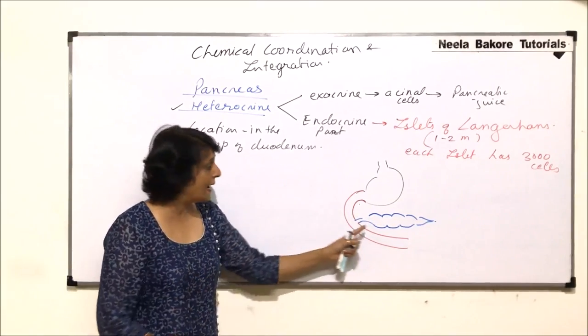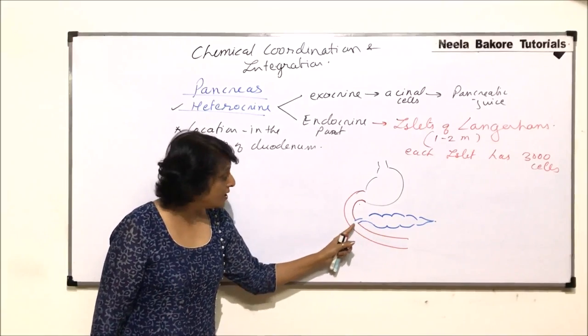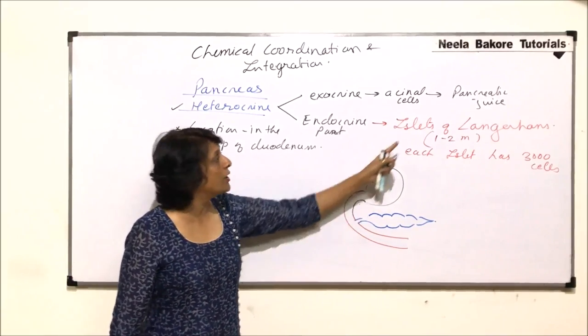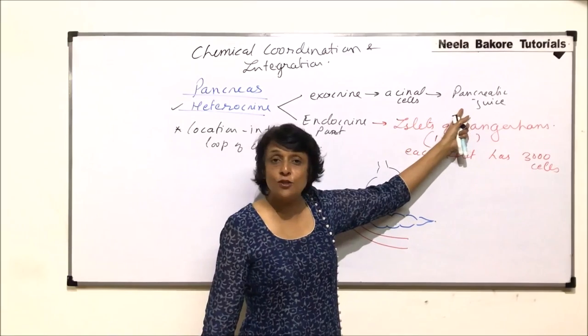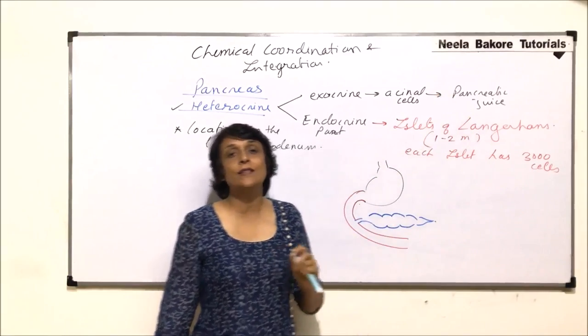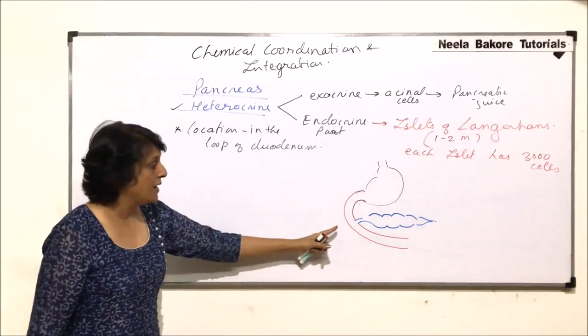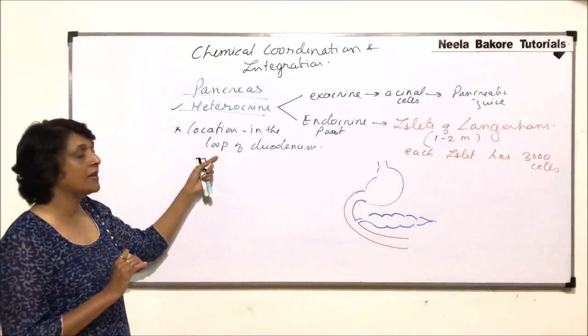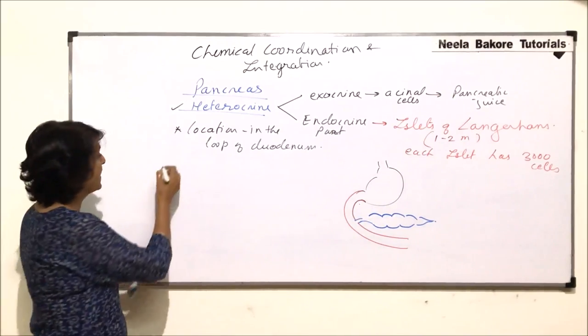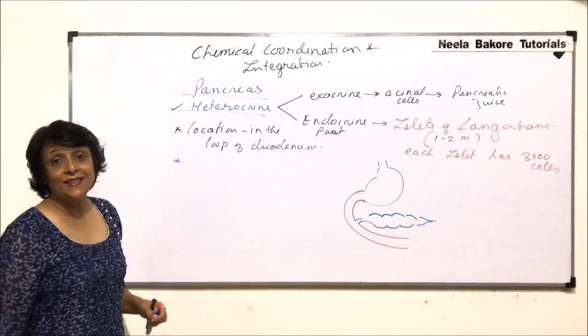The secretions are put together from liver as well as from pancreas. We are not getting into details of that, but the secretion coming into duodenum is the pancreatic juice which contains all the digestive enzymes.